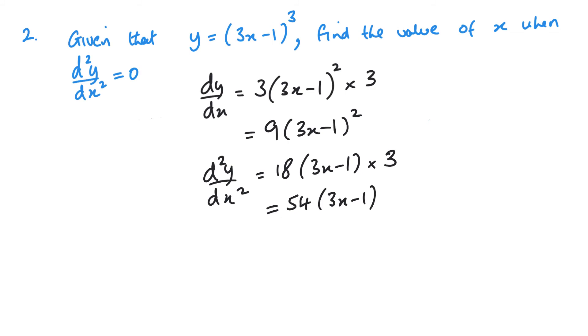Now, when d2y by dx squared is 0, then that means that 54, 3x minus 1 is 0. So, expanding my brackets gives me 162x minus 54. 162x equals 54, x equals 54 over 162, or x is a third.